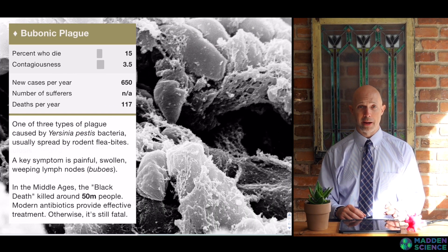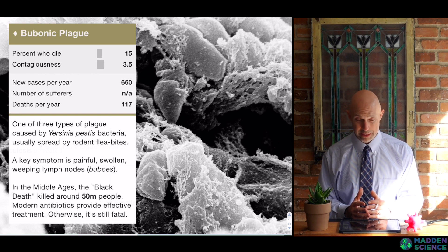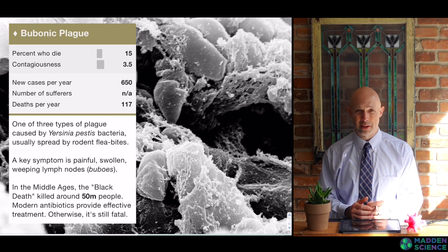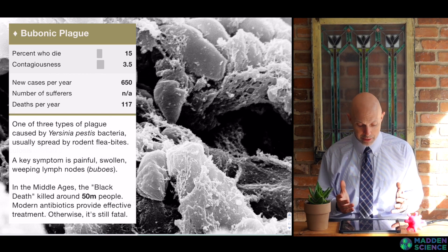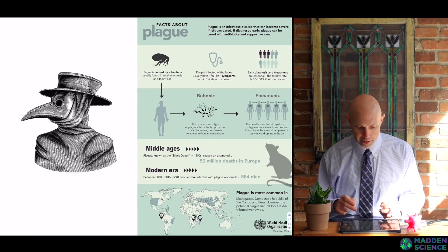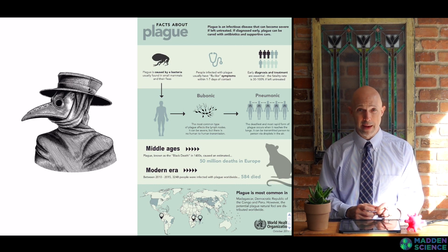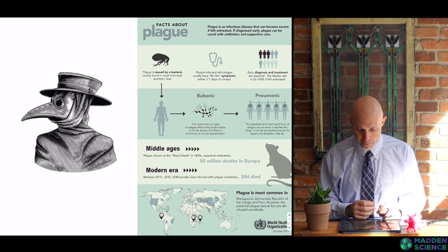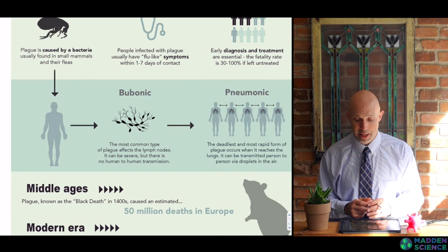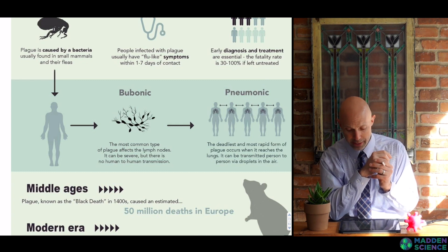Next up, bubonic plague. We've all heard about it — the Black Death from centuries ago. Fairly contagious, large number who die, and still present in our world today, which is interesting. This is caused by the bacteria Yersinia pestis. In the Middle Ages, the Black Death killed between 50 and 100 million people. It can be easily treated with antibiotics, but without treatment it can still prove fatal. You can see the plague doctor and that creepy mask. The vectors go from rats to fleas to humans. We can see the difference between bubonic plague and pneumonic plague — pneumonic plague being one of the deadliest and most contagious infectious diseases historically.